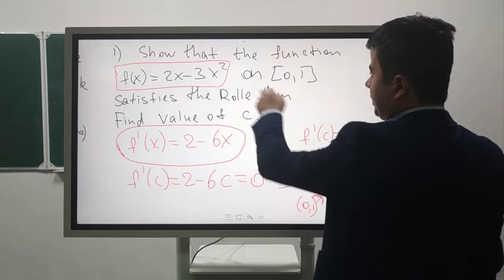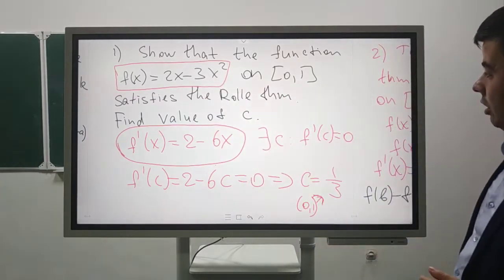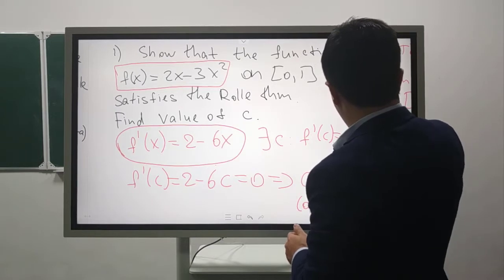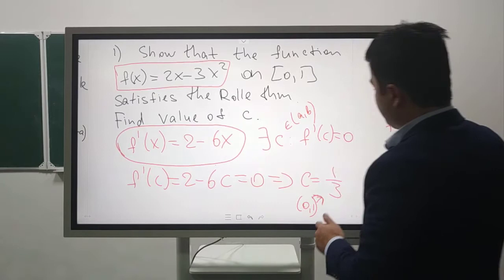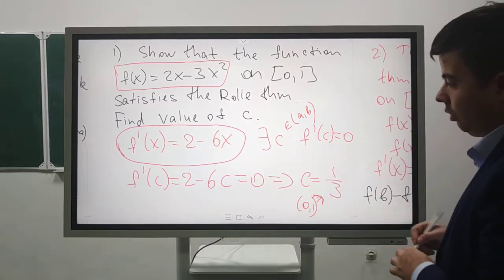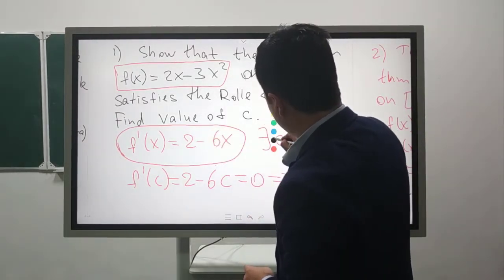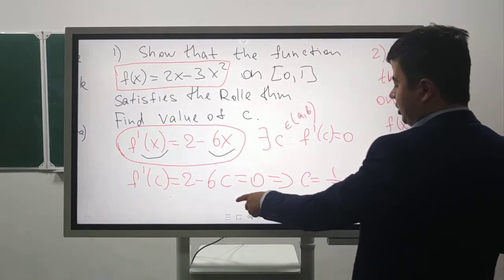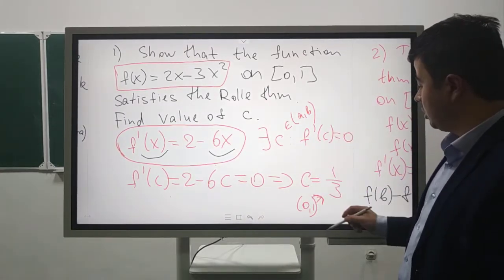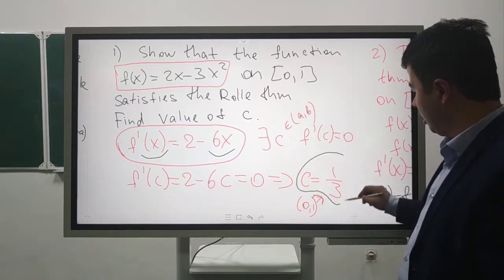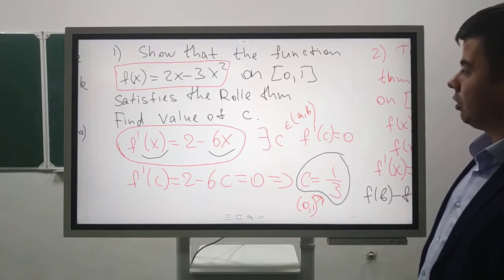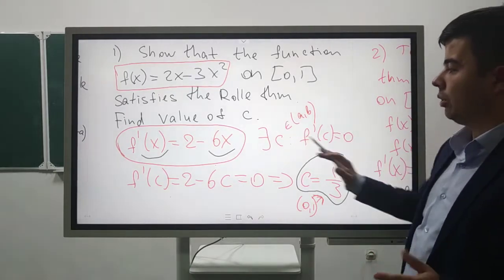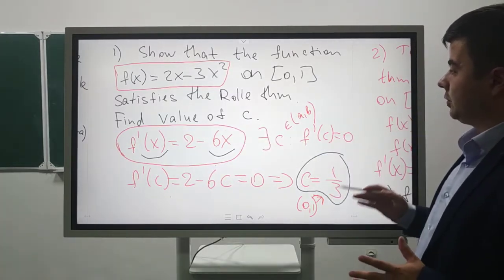The derivative is 2 - 6x. There exists c such that f'(c) = 0. Substituting x = c, we get 2 - 6c = 0 from Rolle's theorem. Hence, c = 1/3. And 1/3 is included in the interval [0, 1]. By this way, we found our value of c, and it satisfies the Rolle theorem.